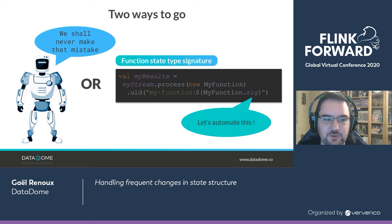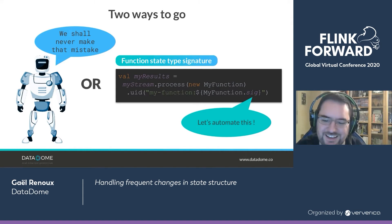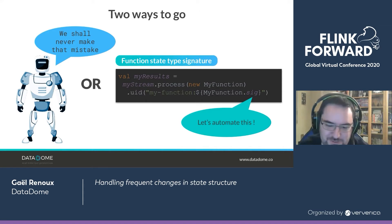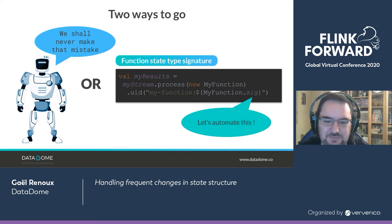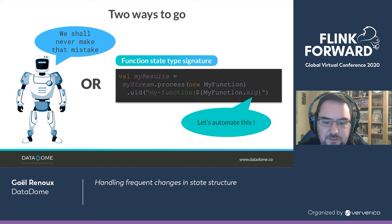Starting from there, there are two ways to go. The first is to assume you're never going to make that mistake again and always remember to update your version number. I don't exactly believe in human beings being able to do something without ever making a mistake. So can we assume people are going to make mistakes and find a way to automate this? Our idea: make something that automatically changes whenever the state structure changes for a function.